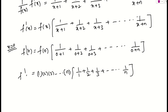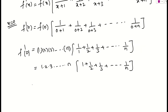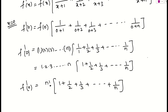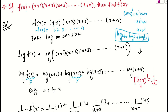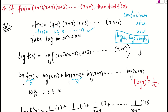So f'(0) = 1·2·3···n · (1 + 1/2 + 1/3 + ... + 1/n), which is n! · (1 + 1/2 + 1/3 + ... + 1/n). This is our final answer. If you are wondering how f(0) becomes 1·2·3···n: wherever x appears we replace it with 0, so 0+1=1, 0+2=2, 0+3=3, and so on. If you have any doubts, please let me know. Thank you.